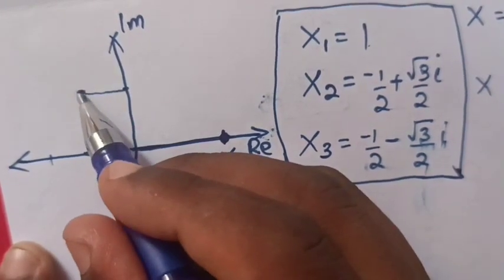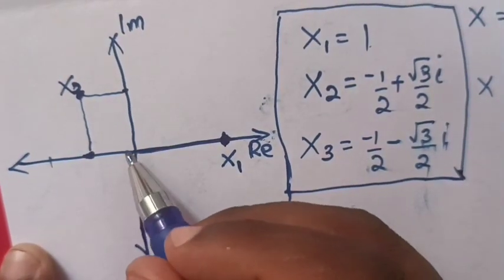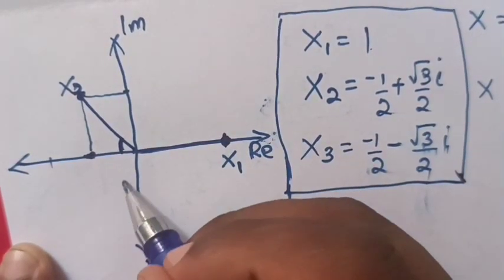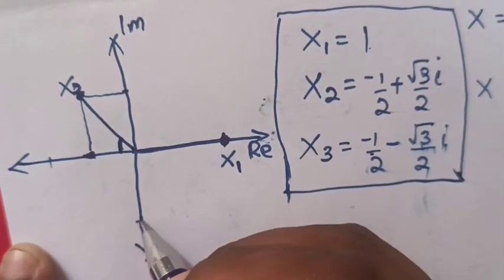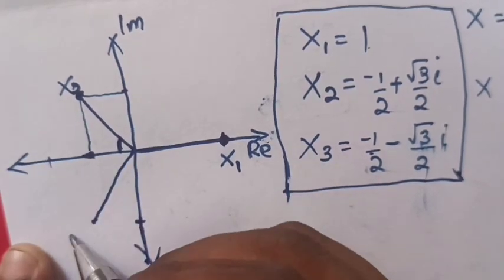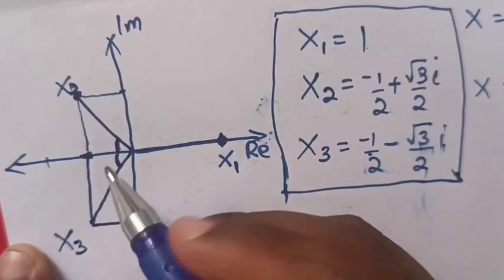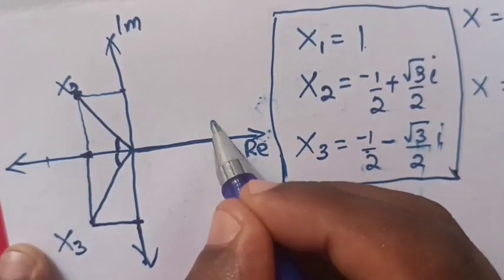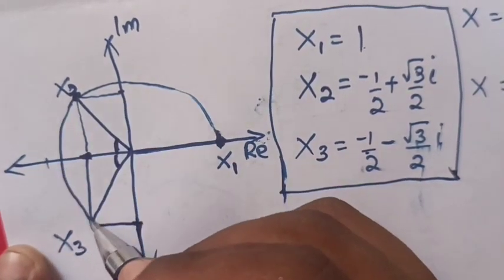The imaginary part of x₂ is √3/2, which is approximately 0.866, so it is positive — the point x₂ is plotted here, and the line for x₂ passes through the origin at this angle. For x₃ it is the same angle but negative, so it is reflected below — here is x₃, same angle but opposite. When we draw a circle it passes through all three points.